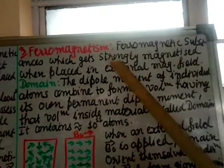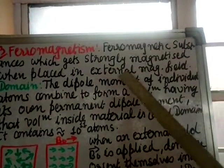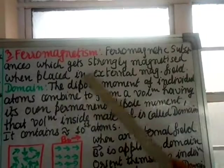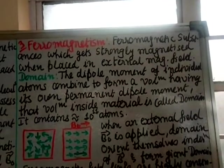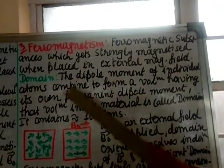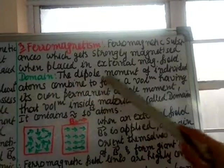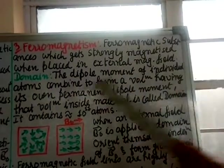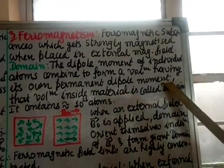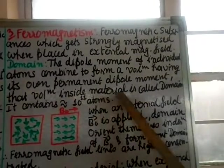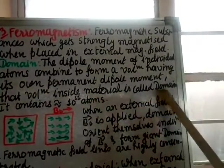Ferromagnetic substances get strongly magnetized when placed in an external magnetic field. So para will get weakly magnetized, ferro will get strongly magnetized. Here we have to define one more term called domain. The dipole moments of individual atoms combine to form a volume having its own permanent dipole moment. That volume inside the material is called a domain.